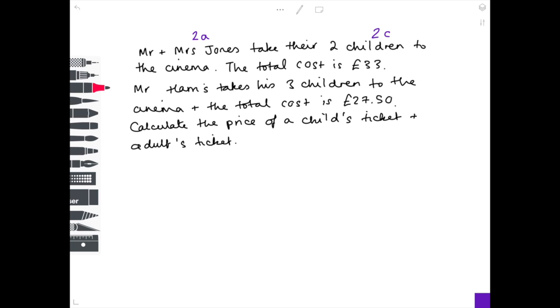Now Mr Harris goes by himself, so he's only one adult, so he's 1A. He has three children, so therefore we have 3C. And now we can form our simultaneous equations, which for the Jones family will be 2A plus 2C equals their ticket price, which was £33. For the Harris family, it's going to simply be A plus 3C equals £27.50. So we're ready to go.